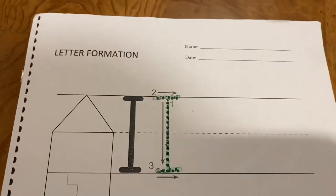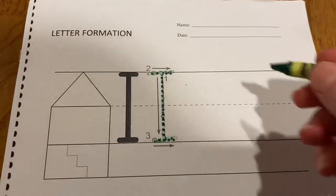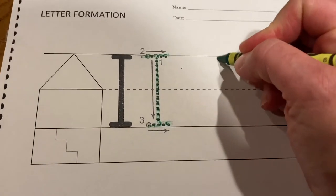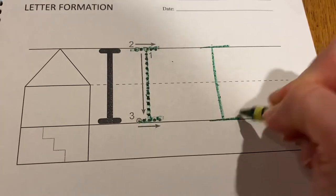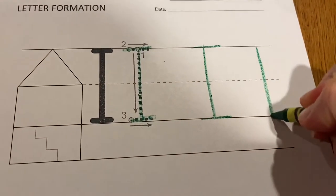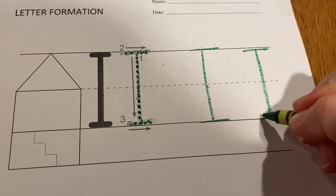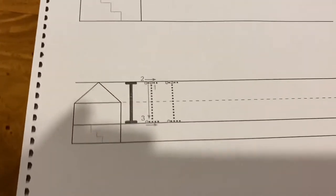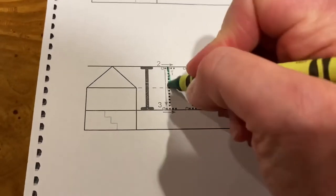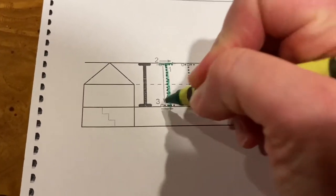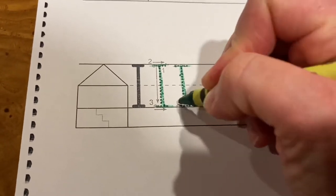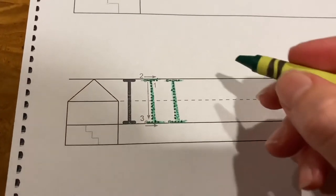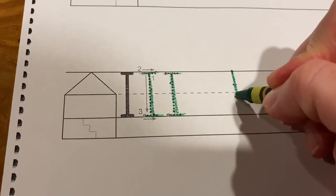Then trace the two on the bottom: line down, line across, line across. Line down, line across, line across. Bring your line down, line across, line across once more to make your uppercase I. You start at the top line and come down to the bottom.